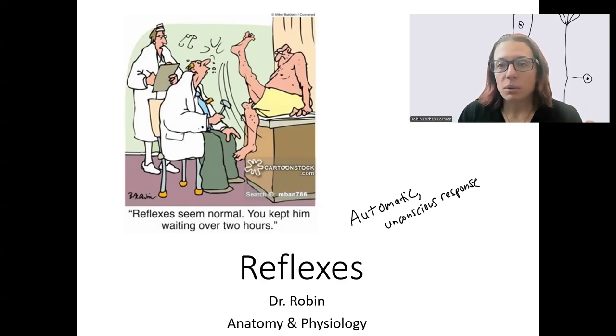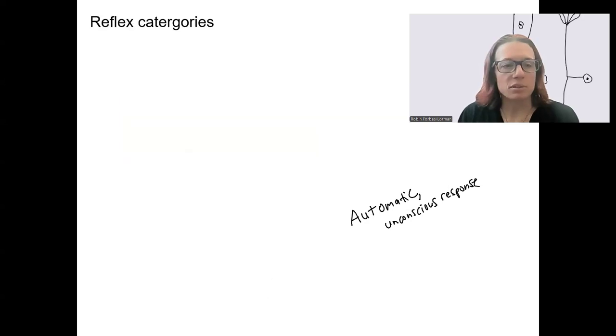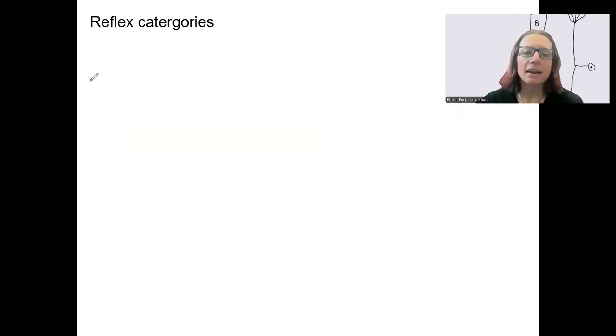Okay, let's start with some different categories of reflexes before seeing some specific examples. So to start with categories, categories can be either somatic or autonomic.